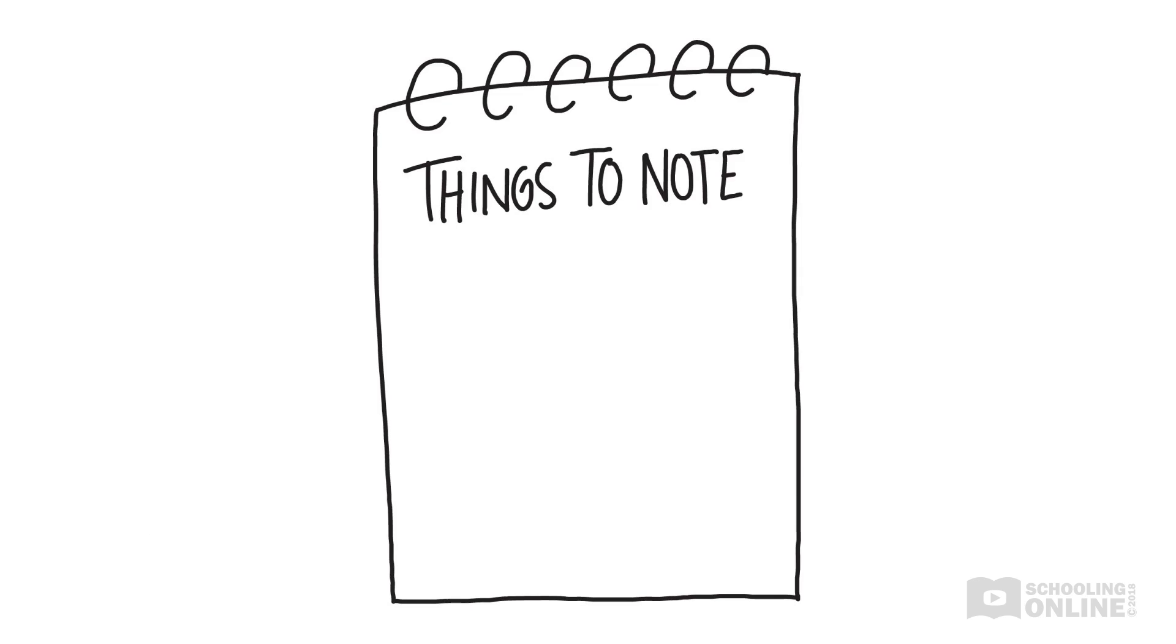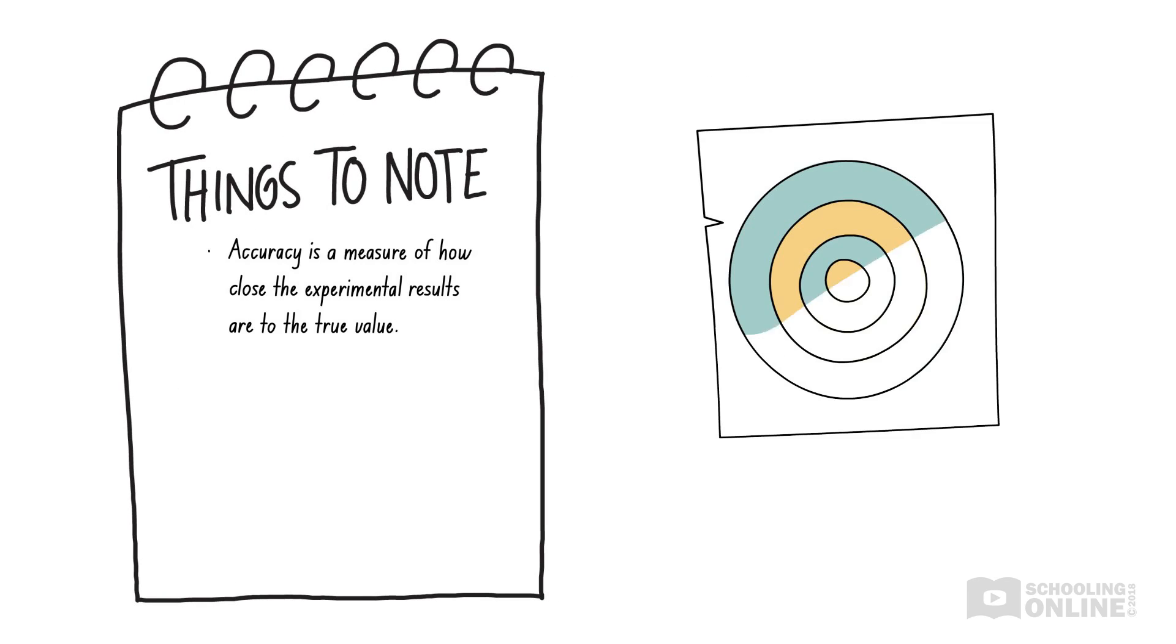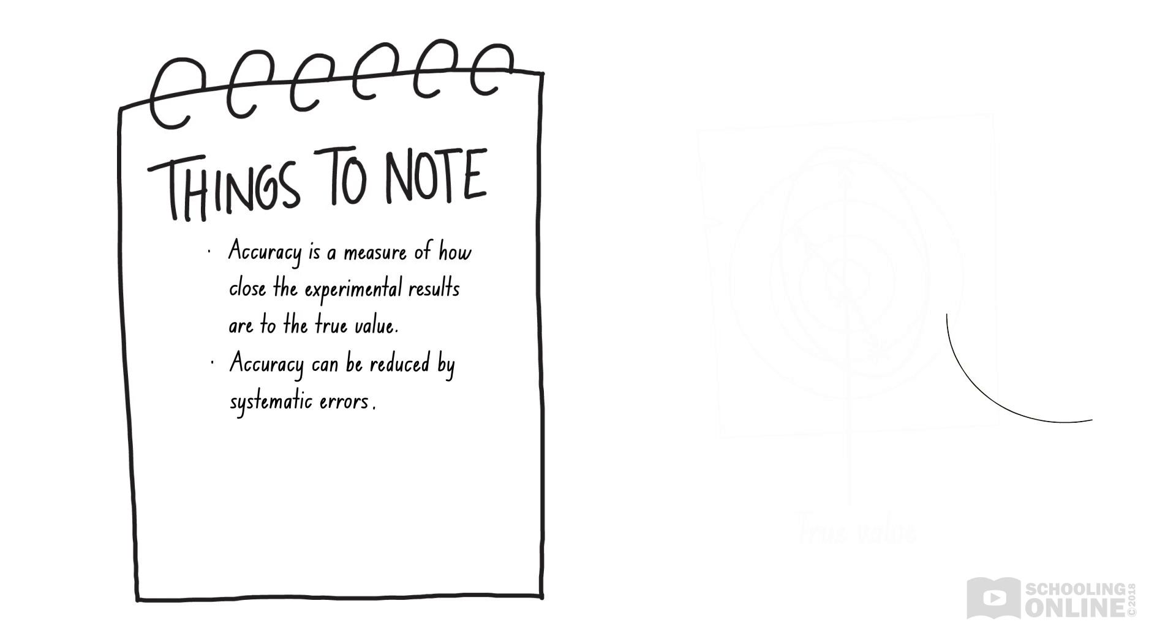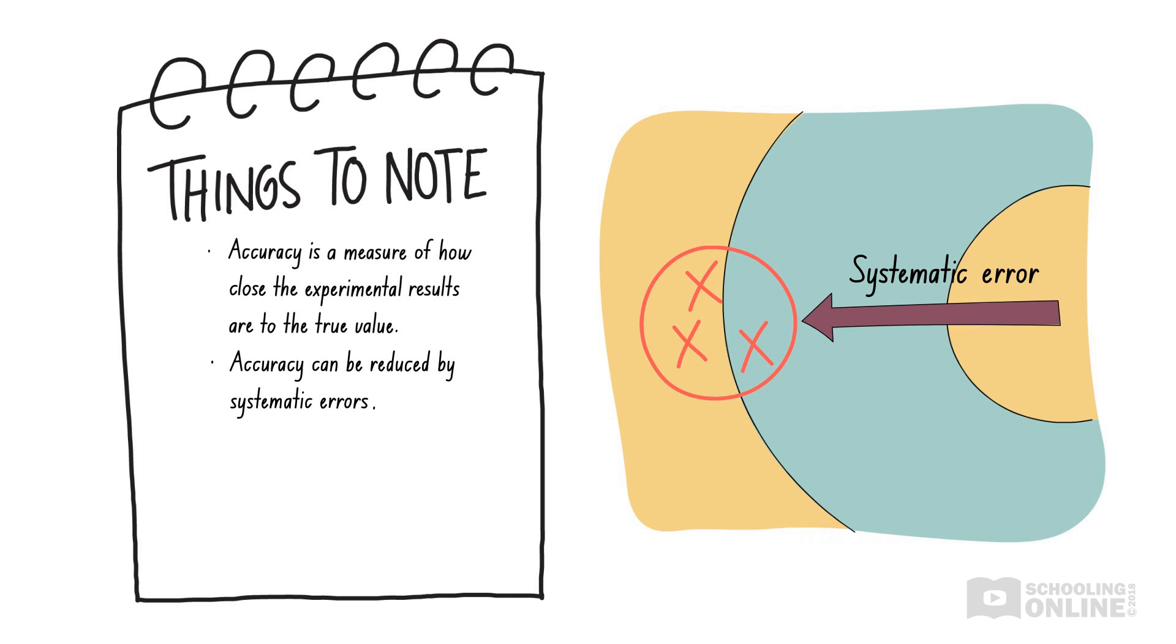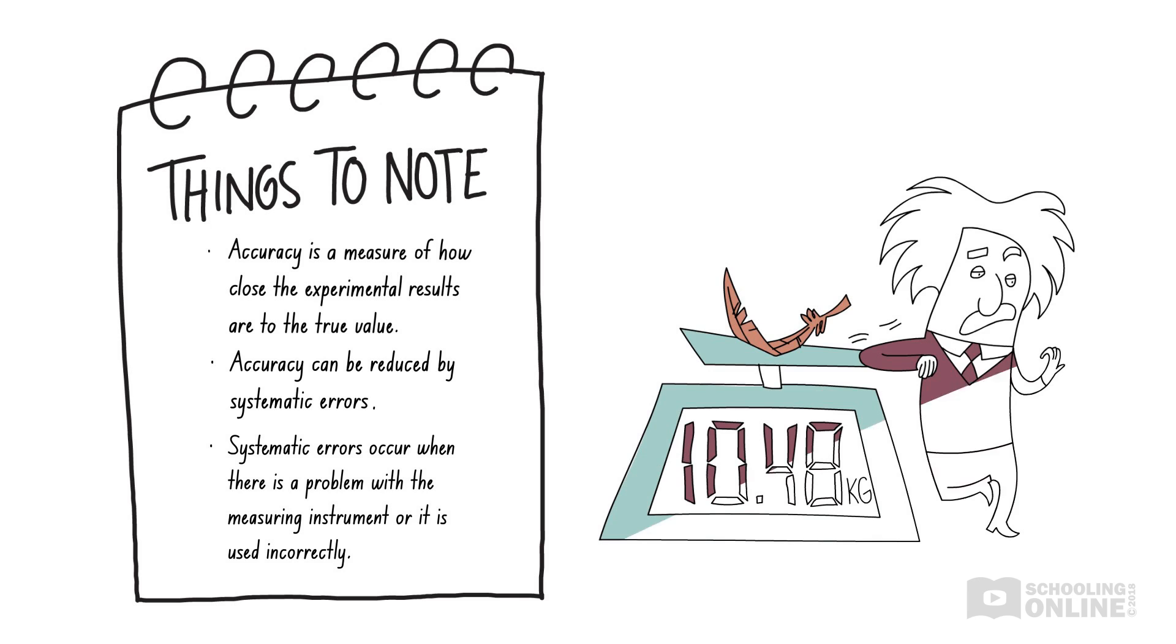Let's quickly revise what we've learned so far. Accuracy is a measure of how close the experimental results are to the true value. Accuracy can be reduced by systematic errors, where there is a repeated, reproducible error that is consistently in the same direction. Systematic errors occur when there is a problem with the measuring instrument or if we are using the instrument incorrectly.